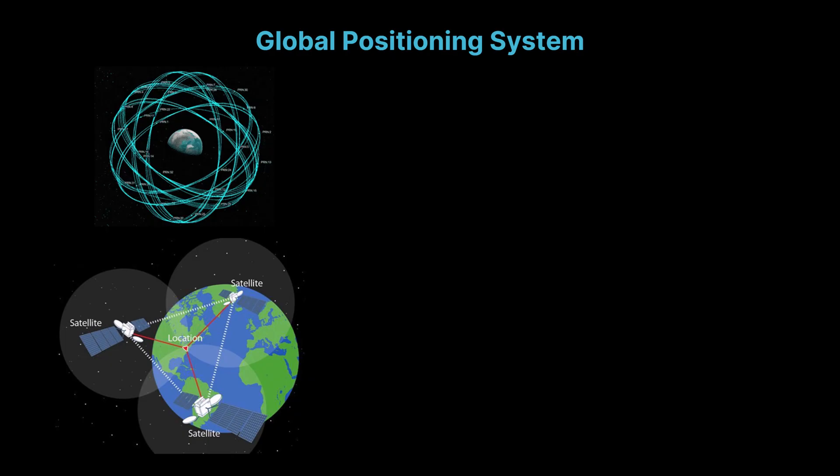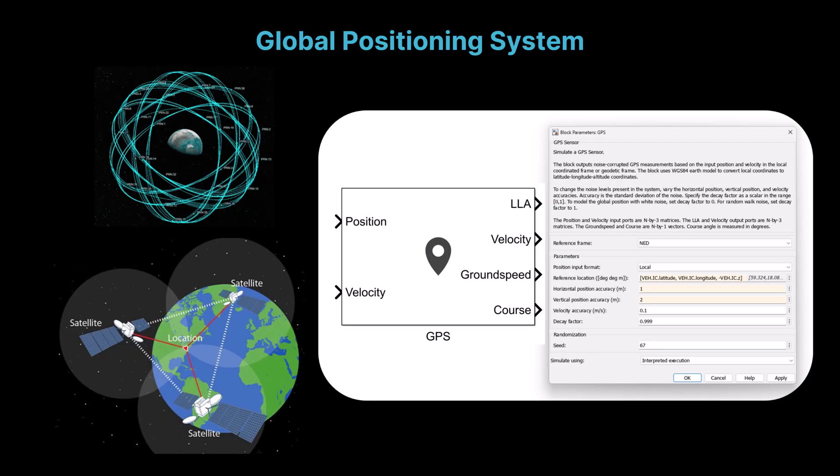By using signals from at least four satellites, it can estimate 3D position, latitude, longitude and altitude, as well as velocity and course over ground. In Simulink, we can model a virtual GPS sensor to simulate this behavior by generating position, velocity and course outputs based on the motion of a vehicle in a simulated environment. This allows us to test navigation algorithms and sensor fusion techniques without the need for real-world data collection.